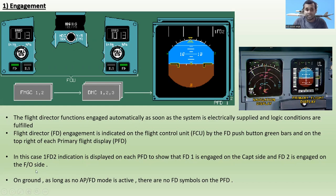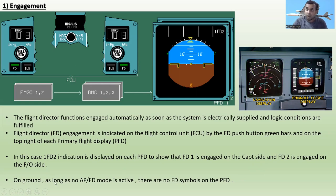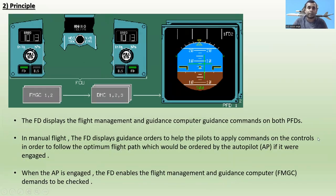On the ground, as long as no autopilot flight director mode is active, there are no flight director symbols on the PFD. You can see the Primary Flight Display and Navigation Display here. Remember: on the ground, as long as no autopilot flight director mode is active, there are no flight director symbols on the PFD.